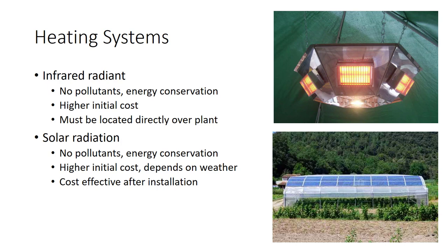The major advantage of the infrared radiant heating system is that it conserves energy and has no problems with pollutants, though the initial cost is higher than other systems. Monitoring the actual temperature the plant is receiving may be difficult because air temperature is not a good indicator, as it warms plants and objects but not air to the same extent. The radiation sources must also be located directly above the plant or pockets of low temperature may occur. The solar radiation system also conserves energy and creates no pollution, though initial costs are high, and it is dependent on weather conditions.